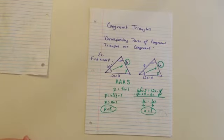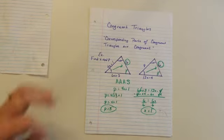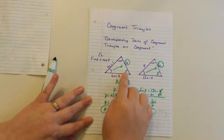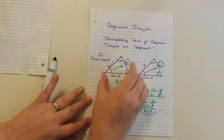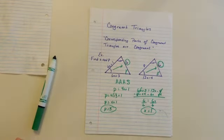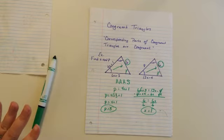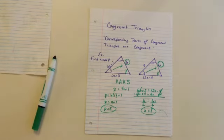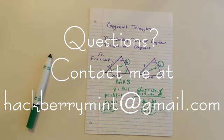That's how you're going to use translation, reflection, and rotation. This one was easy — it was just a translation, so each angle equals the corresponding angle and we could have cut this out and set it right on top. Some problems will have triangles that are rotated or flipped, so you'll have to look carefully to see which angles and sides correspond. Take your time, do the problems carefully, and let me know if you have any questions. Thanks.